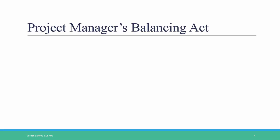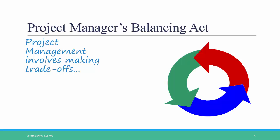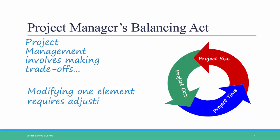A project manager's main job is a balancing act. Project management involves making key trade-offs among three critical aspects of a project: project cost, project time, and project size. Modifying any one of these requires adjusting the others. If the project becomes larger, it's either going to cost more or take more time. If you want to reduce the time of the project, you're either going to have to reduce its size or increase the cost.